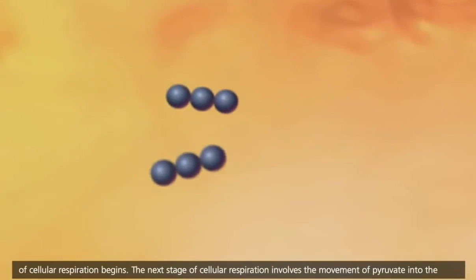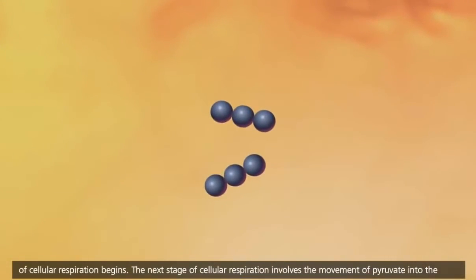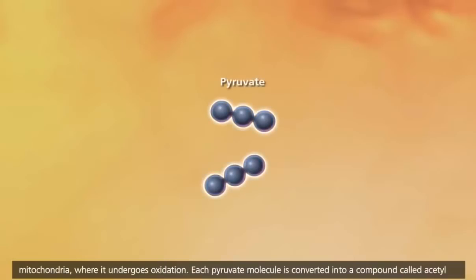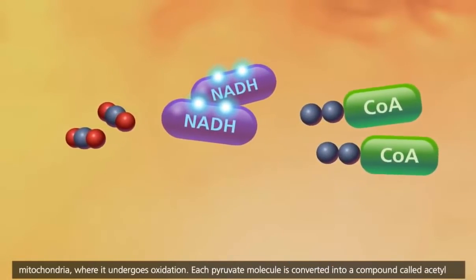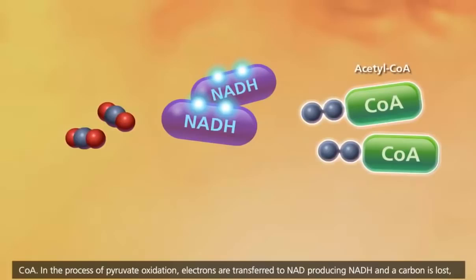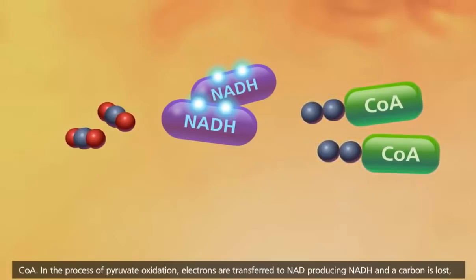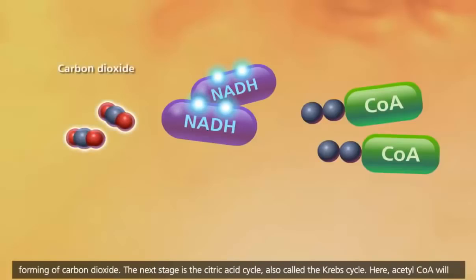The next stage of cellular respiration involves the movement of pyruvate into the mitochondria, where it undergoes oxidation. Each pyruvate molecule is converted into a compound called acetyl-CoA. In the process of pyruvate oxidation, electrons are transferred to NAD, producing NADH, and a carbon is lost, forming carbon dioxide.